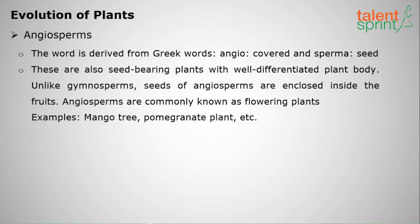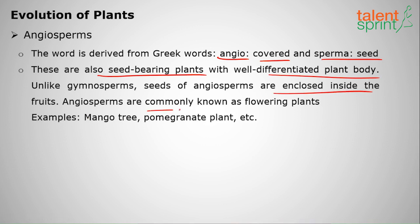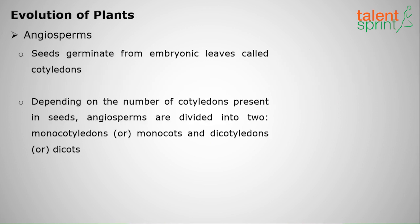Angiosperms are derived from Greek: 'angio' means covered and 'sperma' means seed. They are seed-bearing plants with well-differentiated body and vascular system, and their seeds are covered. Mostly they are flowering plants — mango tree and pomegranate are examples.